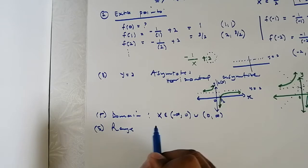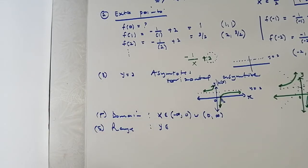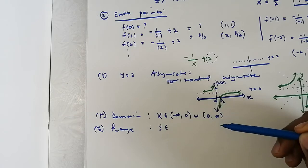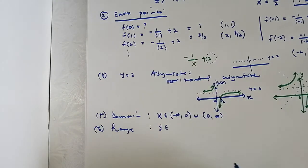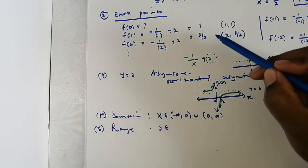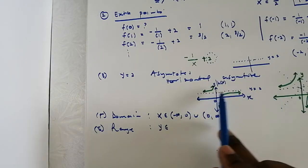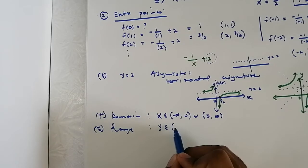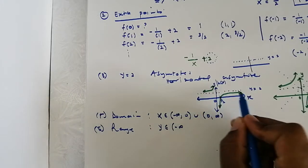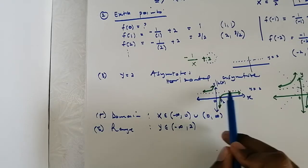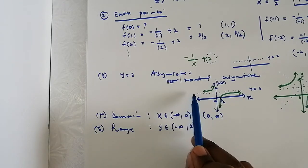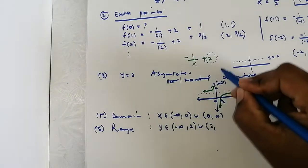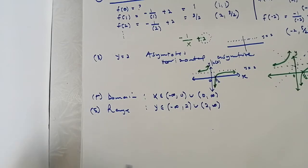For the range of the function — the values of y where your function exists vertically — the function goes down to negative infinity and also up to positive infinity. However, at y equals two the function is undefined because it never touches the asymptote. So the range is from negative infinity up to two, union from two to positive infinity, using round brackets because the function never touches y equals two.